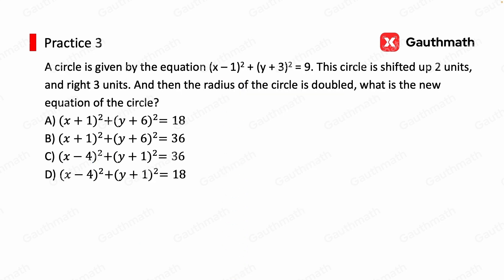One last practice to go. A circle is given by the equation x minus 1 squared plus y plus 3 squared equals 9. This circle is shifted up 2 units and right 3 units. And then the radius of the circle is doubled. What is the new equation of the circle?